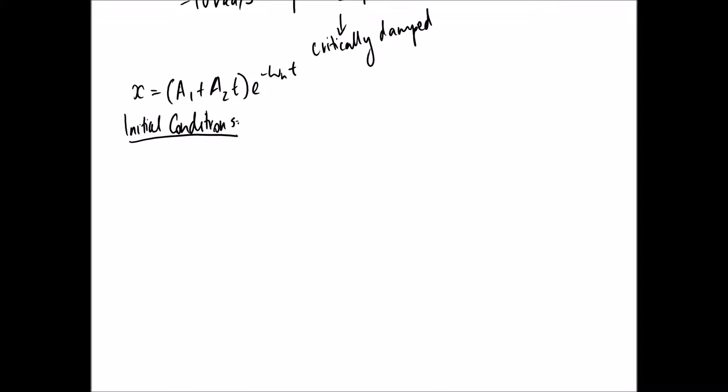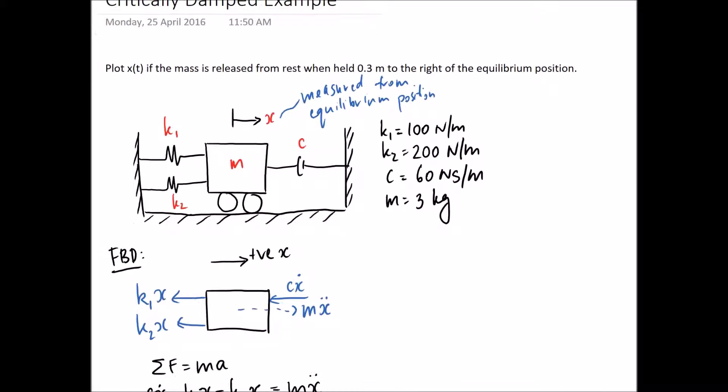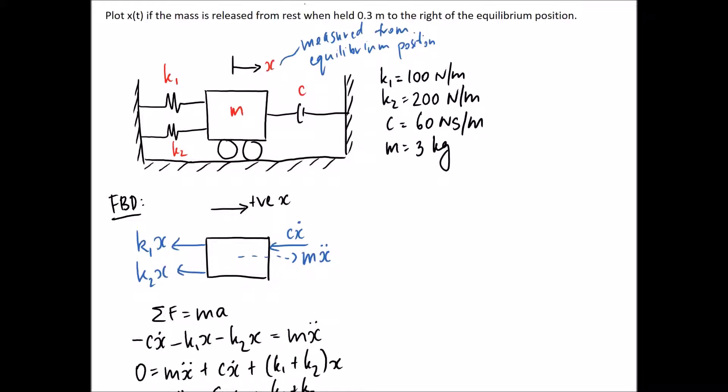To find A1 and A2 we need two initial conditions, since there are two unknowns. The problem states the mass is released from rest and held 0.3 meters to the right of equilibrium. So at t = 0, x-dot equals zero meters per second, and at t = 0, x equals 0.3 meters positive — because it's to the right in the positive direction as defined.